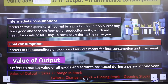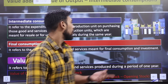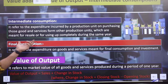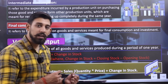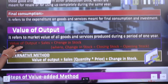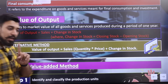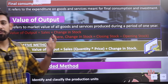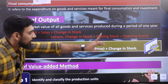Intermediate consumption refers to the expenditure incurred by a production unit on purchasing goods and services from other production units which are meant for resale or completely used up in the same year. Final consumption is the cost of goods and services used — we call it final consumption. The value of output refers to the market value of all goods and services produced during one year. The formula is: Value of Output = Sales plus Change in Stock, where Change in Stock = Closing Stock minus Opening Stock.